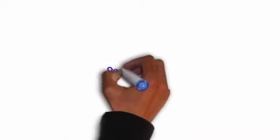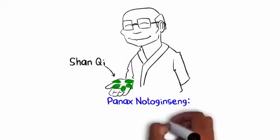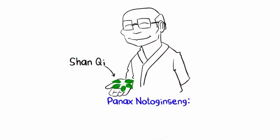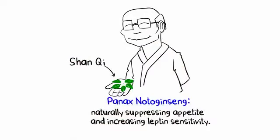Leptiburn's fourth ingredient is Panax notoginseng, a well-known and commonly used traditional Chinese herb called Shan Kui by master herbalists that was recently shown to also have metabolic properties, including naturally suppressing appetite and increasing leptin sensitivity.